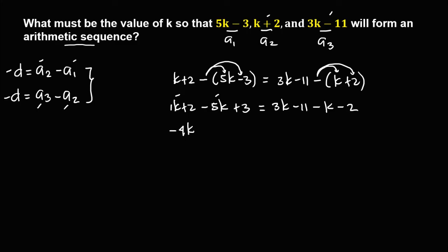So we have negative 4k, then positive 2, then positive 3. On the right side, 3k minus k is 3 minus 1, that's 2k. Then negative 11 minus 2 — since both are negative, just copy the sign and add the numbers: 11 plus 2 is 13, so that's negative 13.